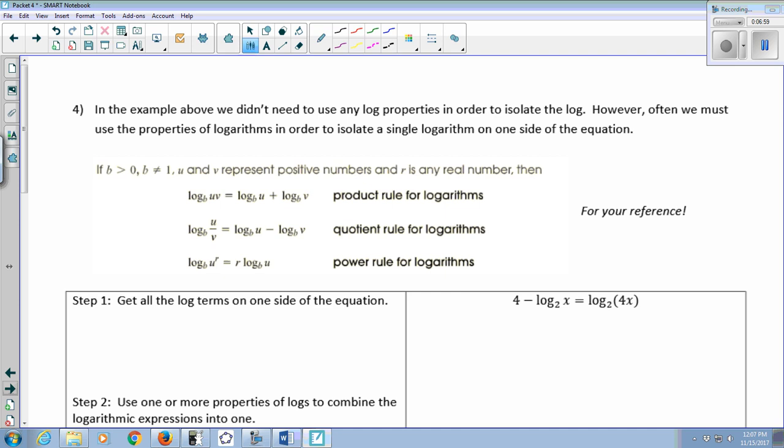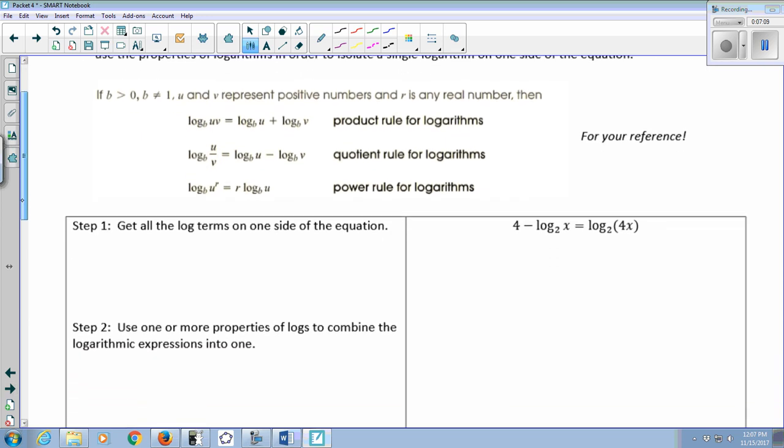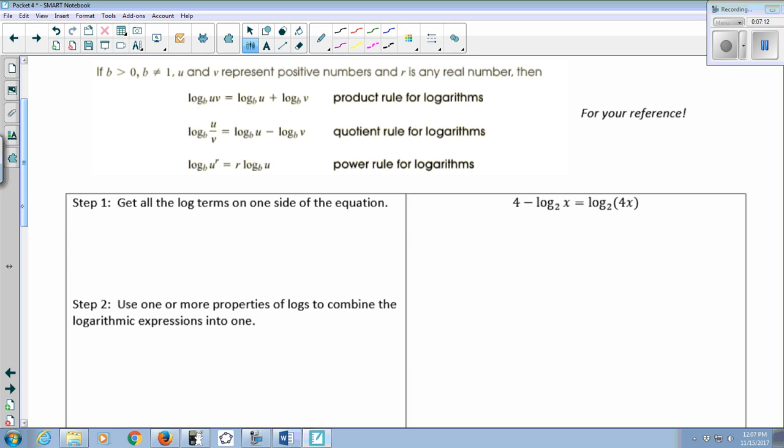In that example, we didn't have to do anything with log properties in order to isolate the log. But we often must use those properties to isolate the single logarithm on one side of the equation. So I just copied them here for your reference so we can refer to them as needed. If there's more than one log in your equation, you're going to use the compression stuff where you compress your logs into a single log. So we want to get all the log terms on one side. This is going to be 4 equals log base 2 of 4x plus log base 2 of x.